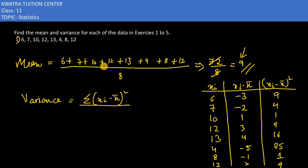To find variance, use the formula: summation of (x_i minus x̄)² divided by n, where n is the total number of observations. Adding up all these squared values gives 74. Dividing 74 by 8 gives 9.25 as the variance.